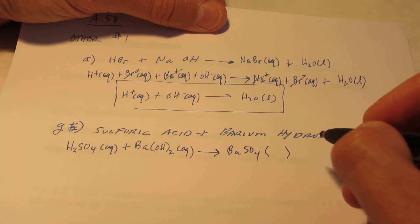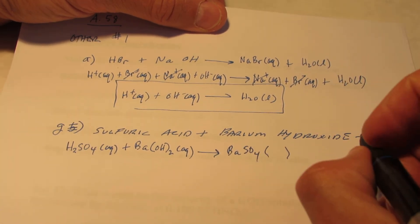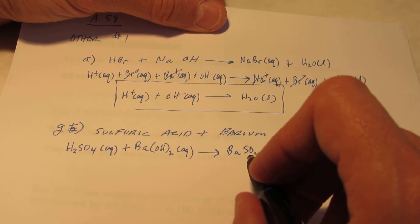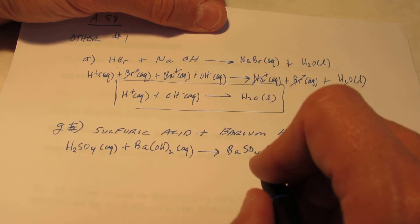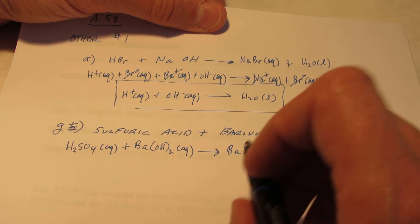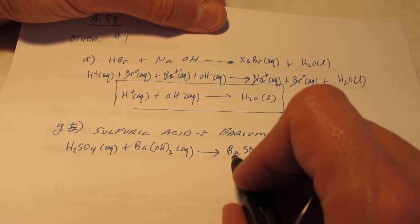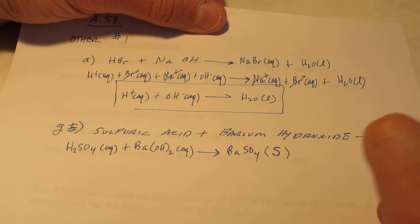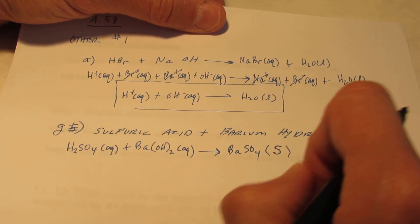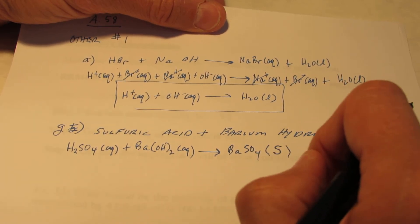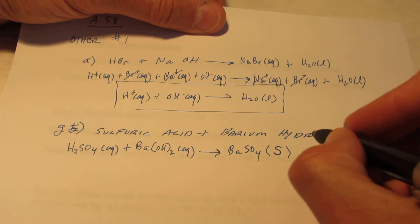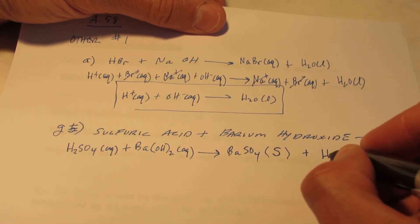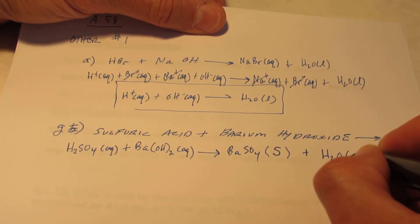If you look at your solubility rules, you'd use the sulfate rule. The sulfate rule says that all sulfates are soluble except for silver, mercury, lead, calcium, strontium, and barium. So BaSO₄ is a solid — that means it sticks together in water, water cannot separate those ions. My other product is H getting together with OH, which of course is water.